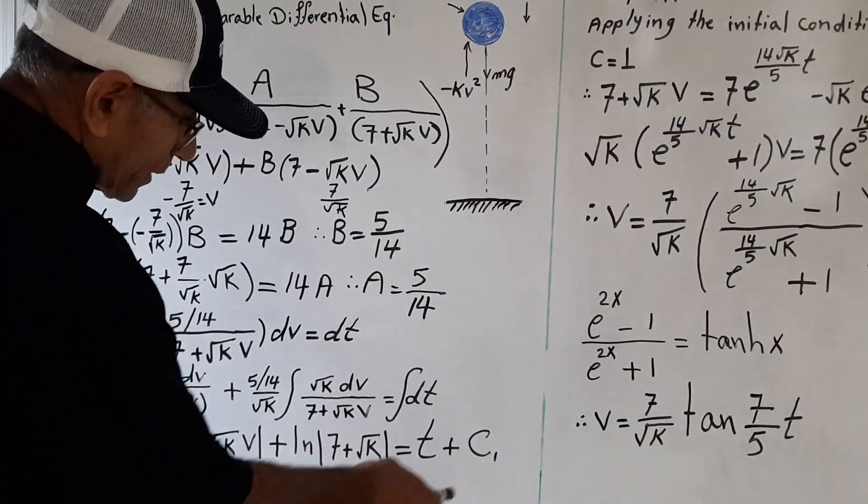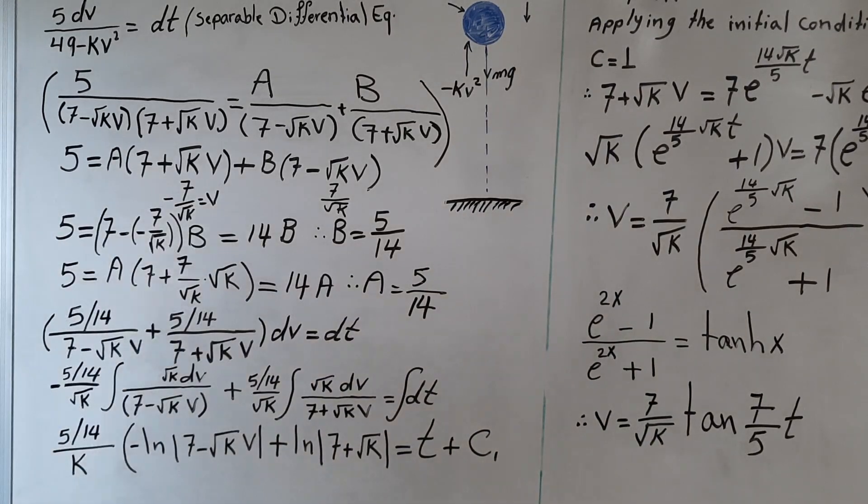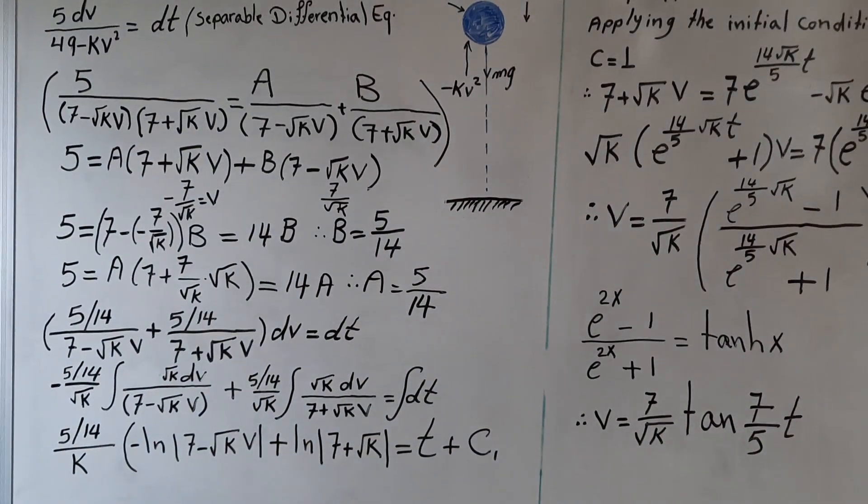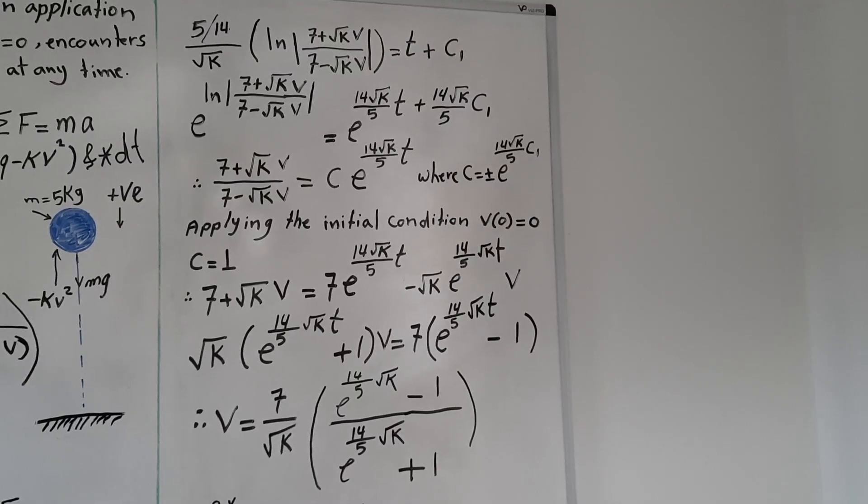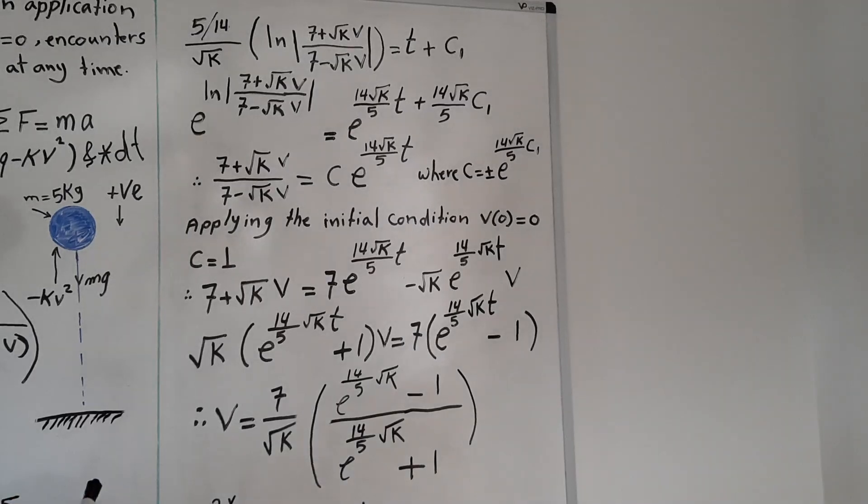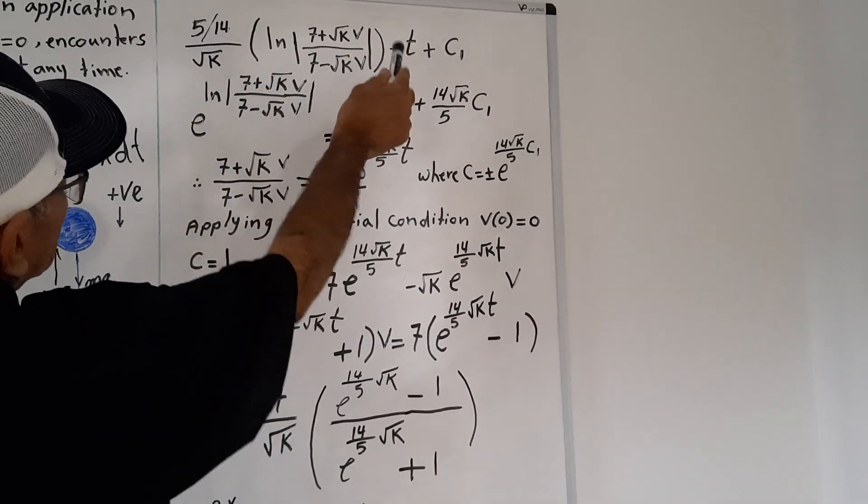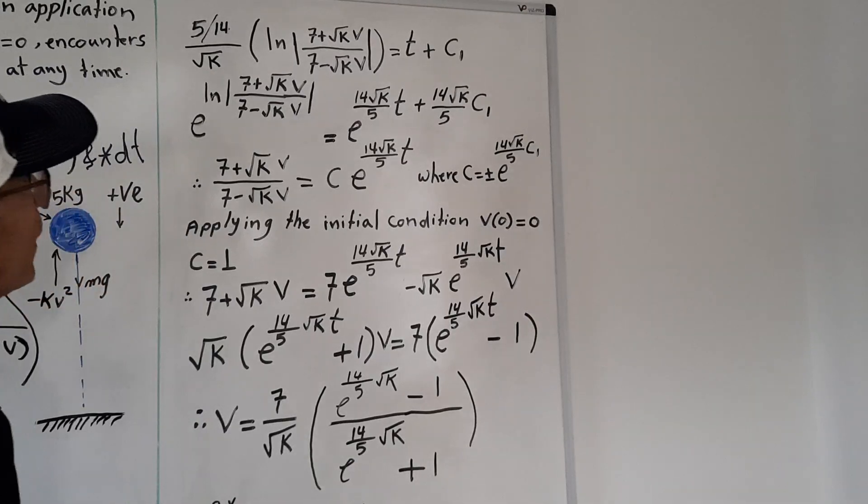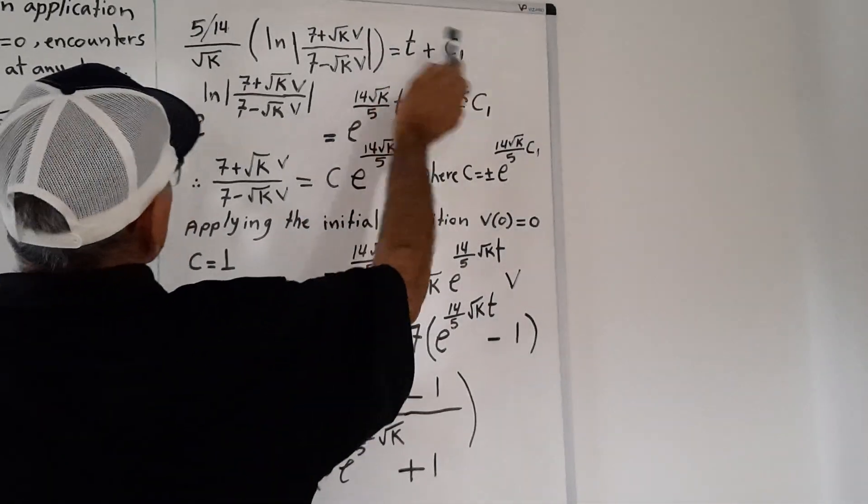This is ln of 7 plus root square kv minus ln of 7 minus root square kv equals t plus C1. C1 is constant of integration. We got 5 over 14 root square k ln of this expression equals t plus C1.